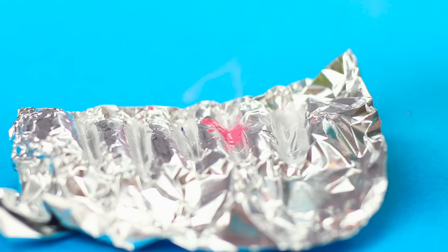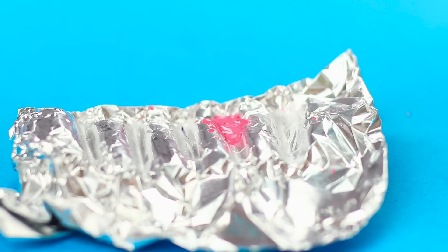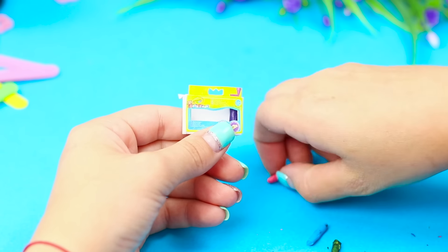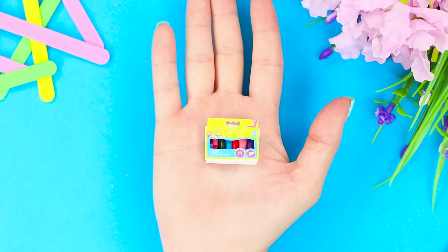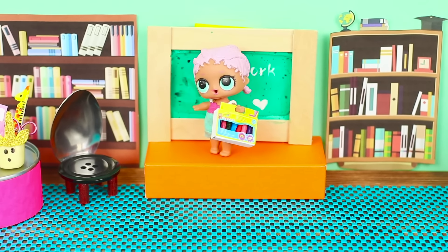Pour the liquid wax in the grooves on the foil. When the wax hardens, take a mini box and put the crayons in it. Now your LOL doll has her own drawing kit! She seems very happy!